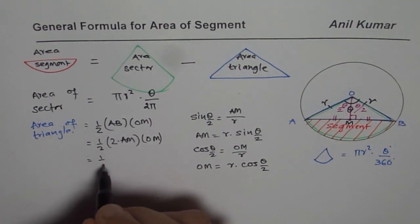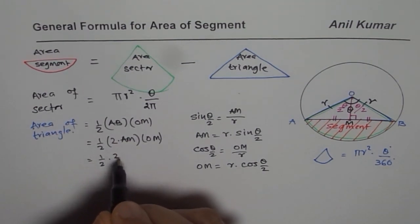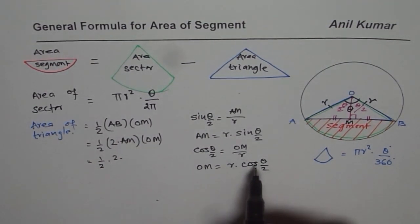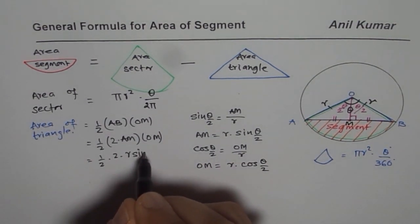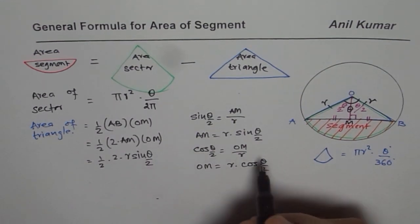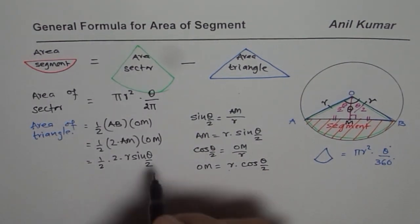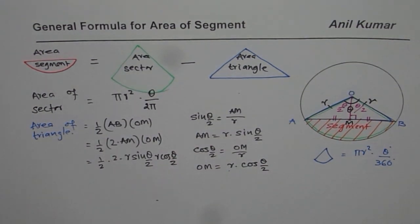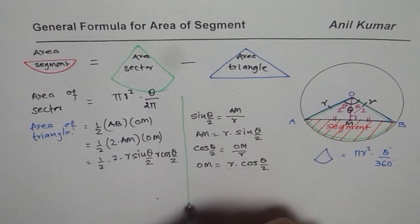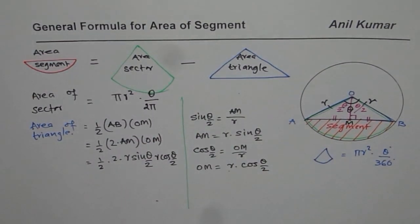Now we have half 2 times am. am is r sine theta by 2. And om is r cos theta by 2. So that is how you get area of the triangle. So this is the formula.